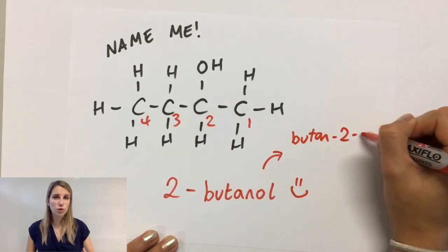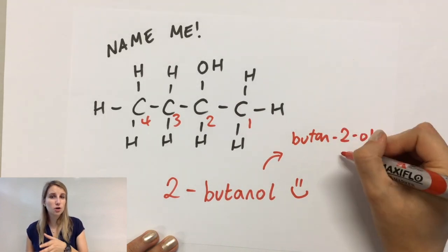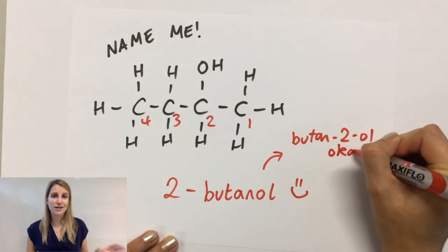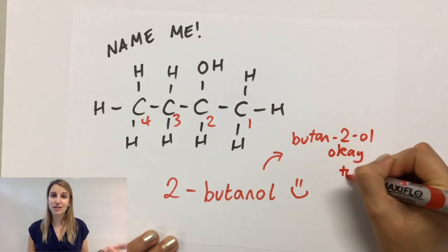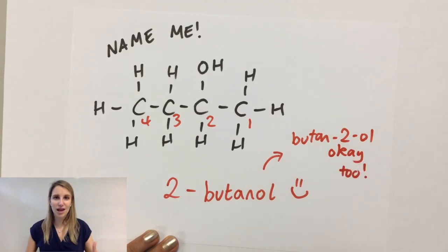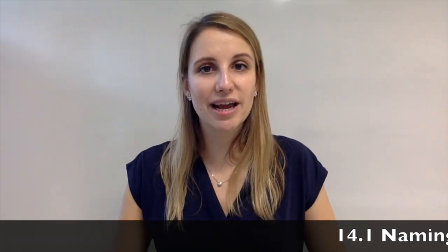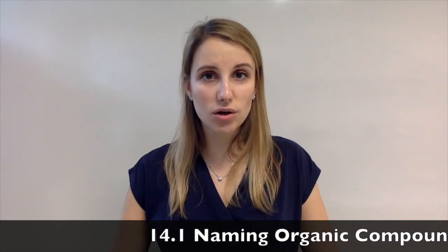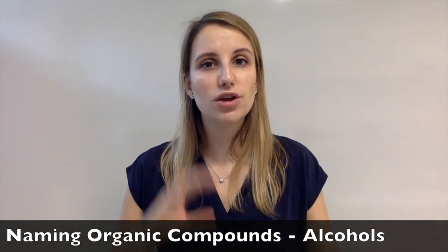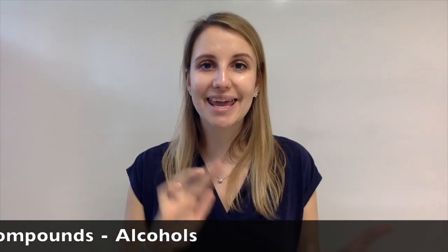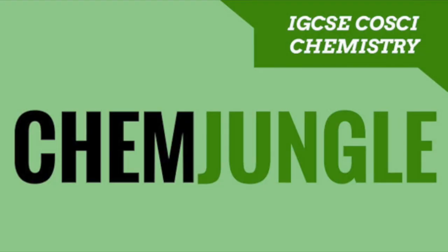Your teacher may have taught you to call it butan-2-ol, which is also fine and perfectly reasonable. There are just different ways of naming things coming from different sources — both are okay. That's as tricky as it gets when it comes to naming alcohols. Go back and review that you can do all the alcohols, alkenes, and alkanes together, spotting the differences between them.